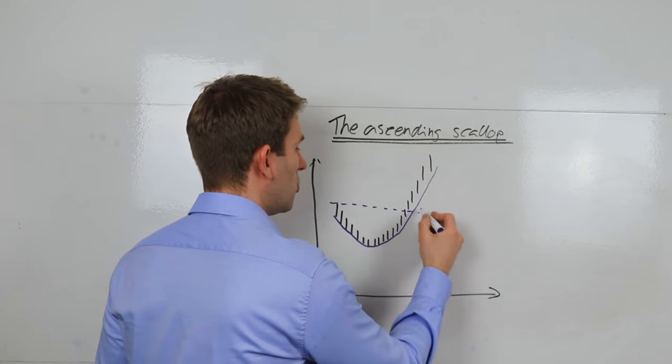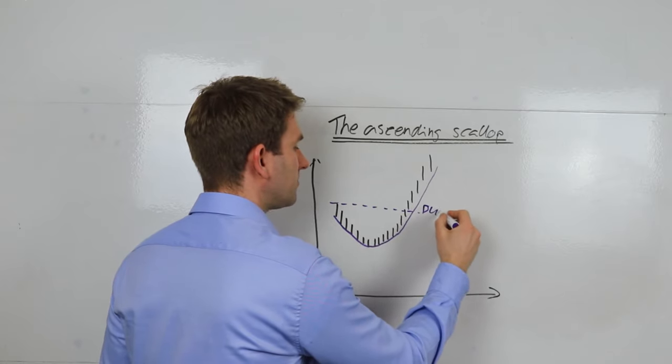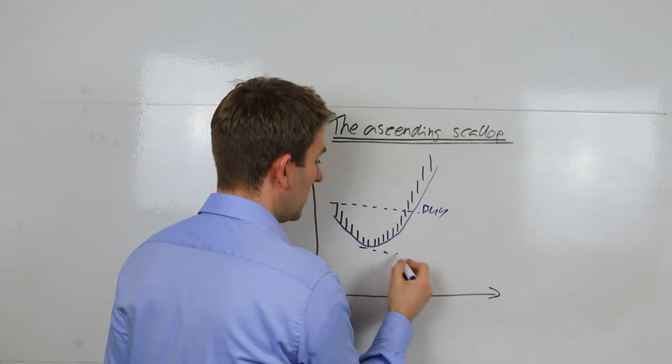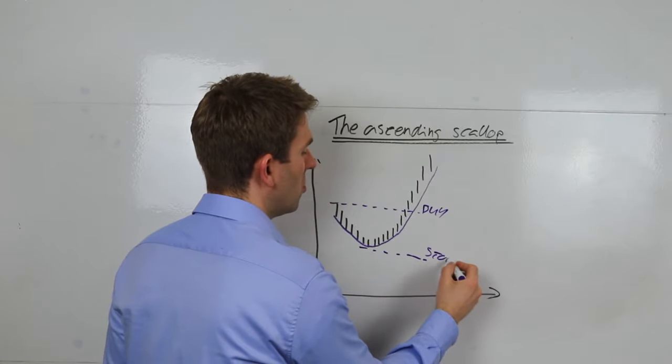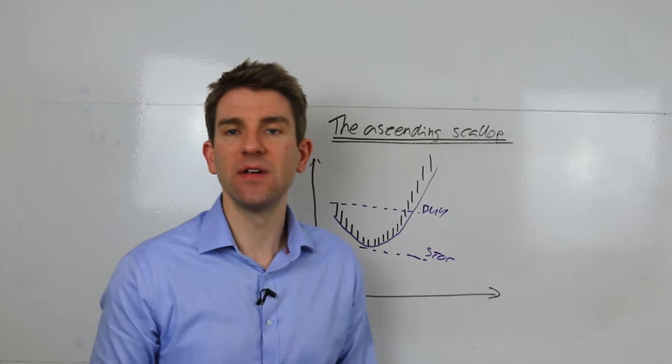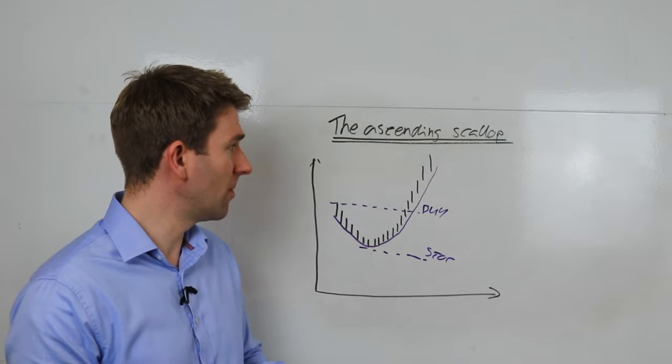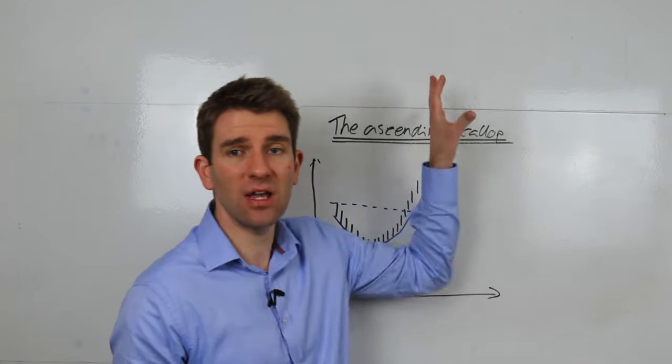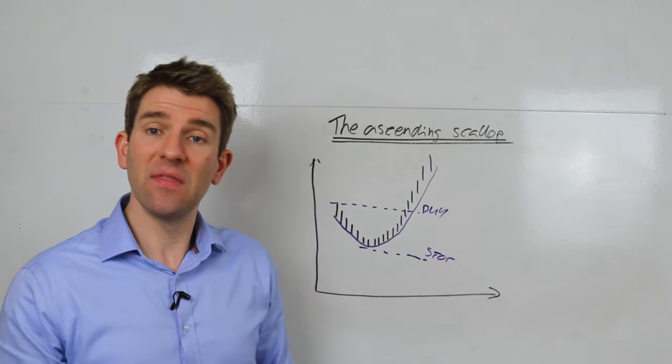Here would be where you'd have your buy - you go long here and your stop would be under that low. You can see it's more for a swing trader's perspective than a day trader's perspective because it's a reasonable stop, but if you've got a multiple target many times your risk up there, then it's going to work out okay.